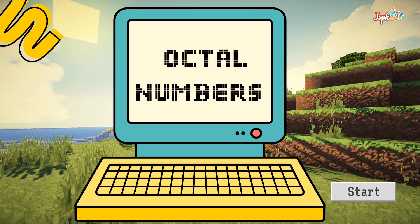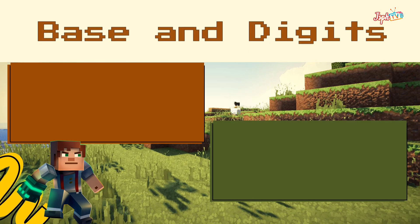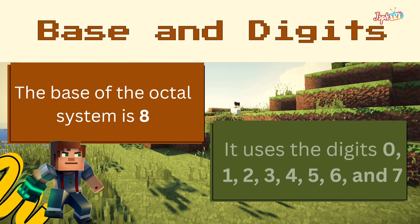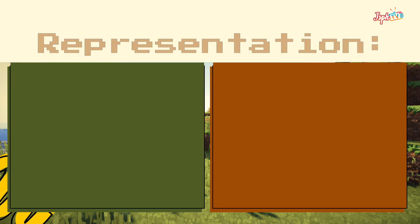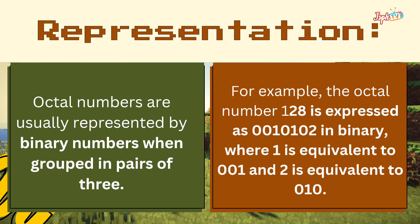Next, the octal numbers. The octal number system is a base-8 system that uses digits from 0 to 7 to represent any number. The base of the octal system is 8 and it uses the digits 0, 1, 2, 3, 4, 5, 6, and 7. Octal numbers are usually represented by binary numbers when grouping pairs of 3.